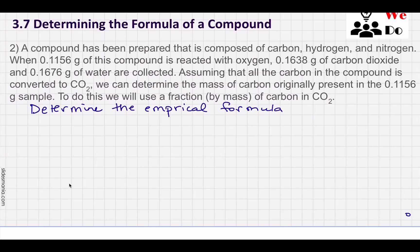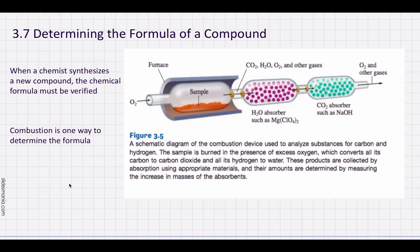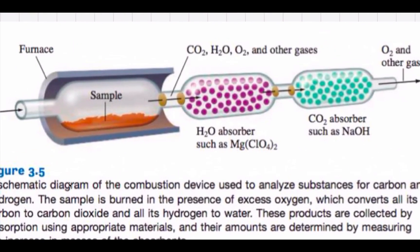This is a video where we're going to look at an unknown compound. If you have an unknown compound but you know what elements are in it, you can do combustion — you burn the substance and get carbon dioxide, water, and other things. We focus on the water and the carbon dioxide. We can figure out the amount of hydrogen by using the water amount, and the carbon by using the carbon dioxide amount.